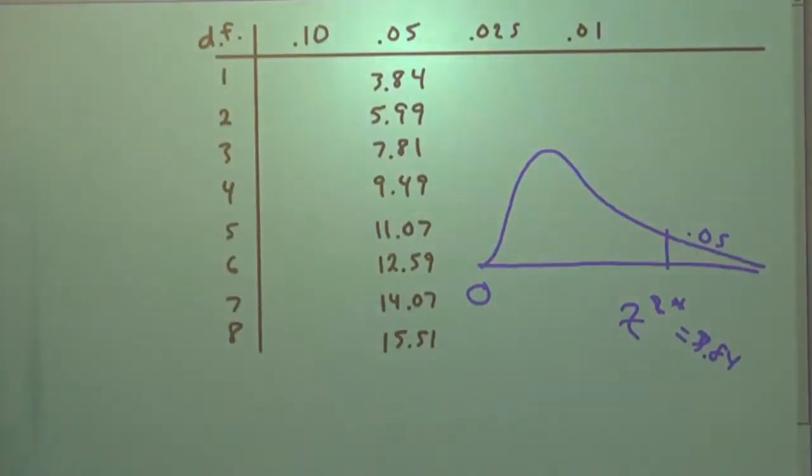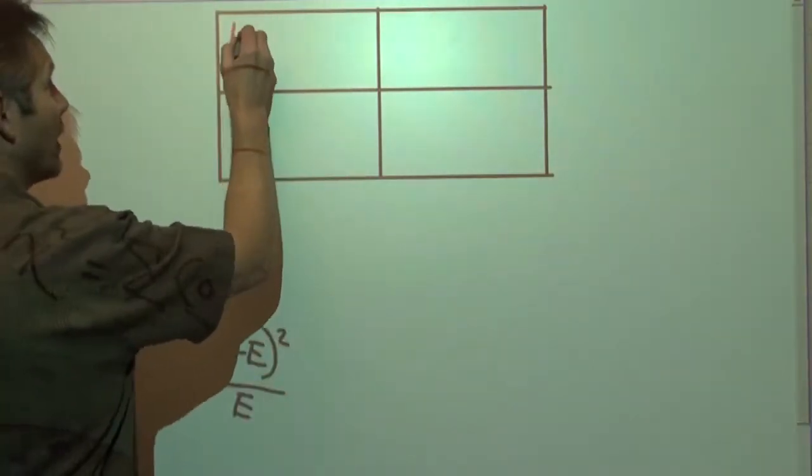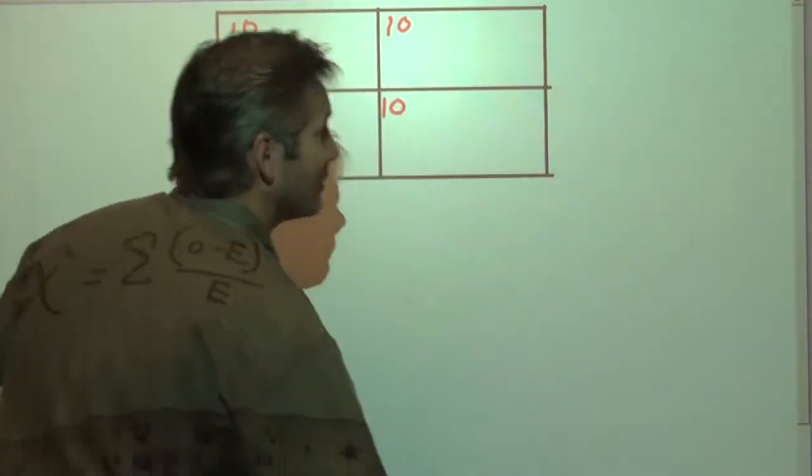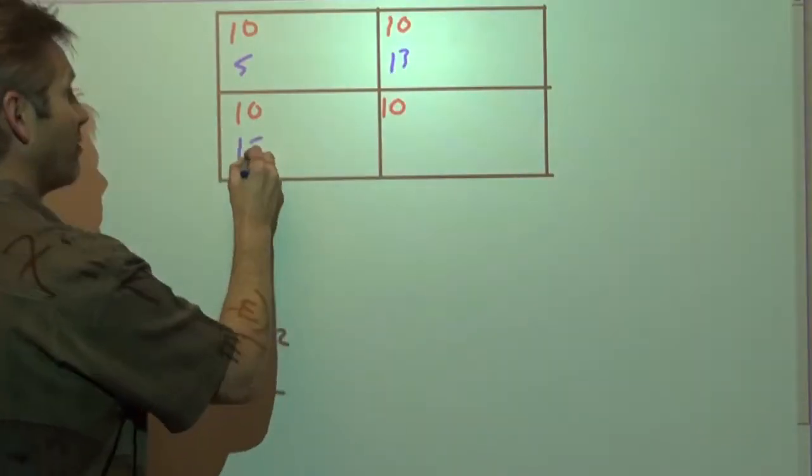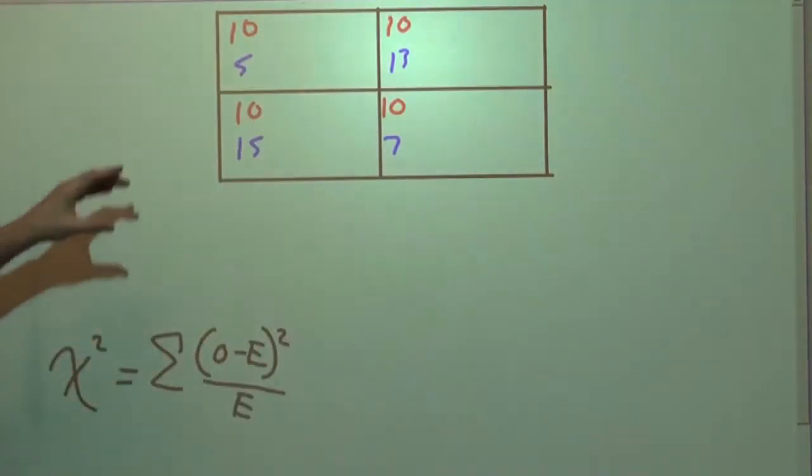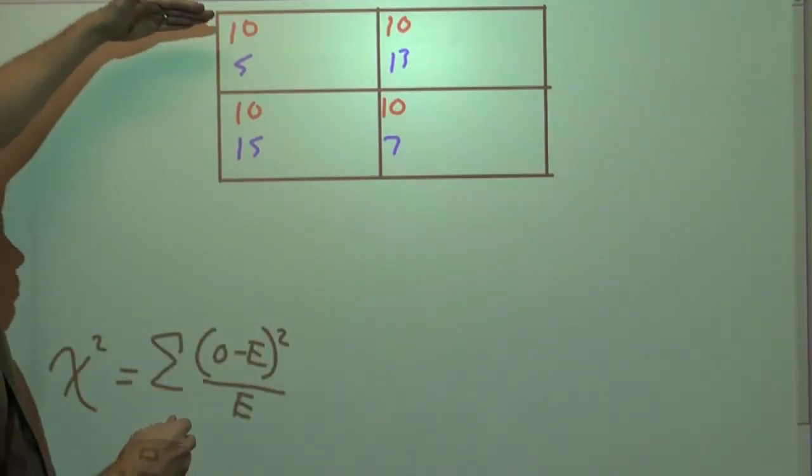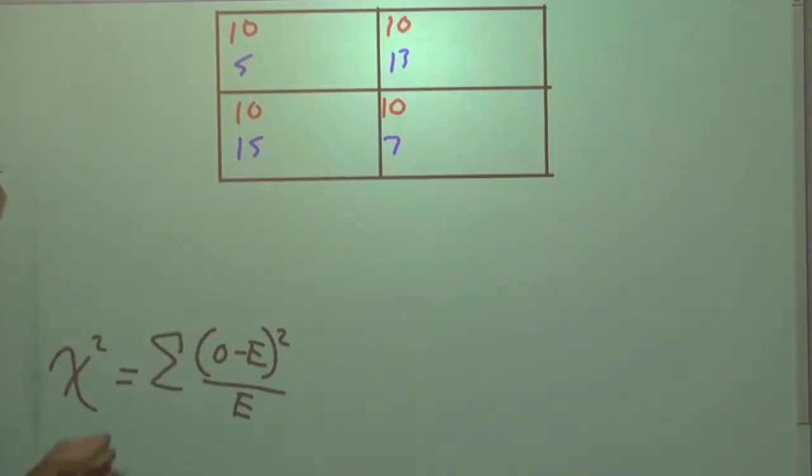What happens if instead we do this frog launching thing, and we're supposed to get 10 in each cell, but what if instead, when we launch these bad boys, they ended up here 5 times, here 13 times, here 15 times, and here 7 times? Well, now what we can see is, wait a minute, these observed counts in the blue tend to be pretty far off from what we would have expected. So we're going to suspect that these differences are no longer due to chance.